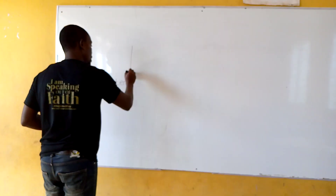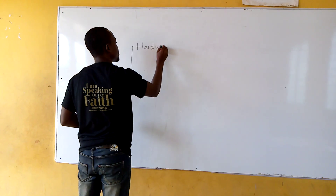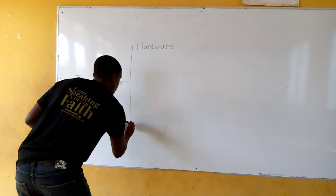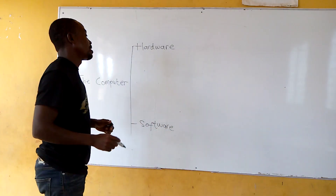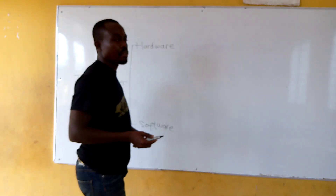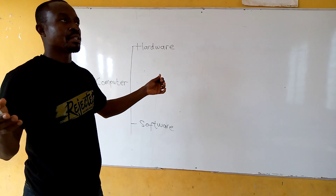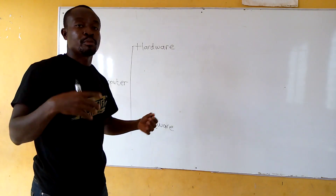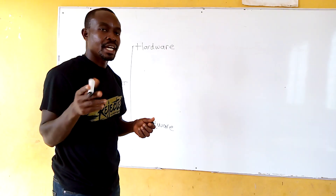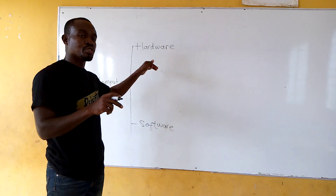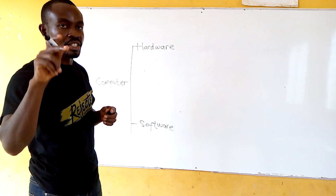The two main parts of the computer are the hardware and then the software. Now, there are different kinds of hardware. If I ask you to mention them, you may end up forgetting some or remembering some. But there's a simple way you can remember all the types of hardware that we have, and that's what I'm going to show you. There are different kinds of hardware, and their names are known by the function that they perform.